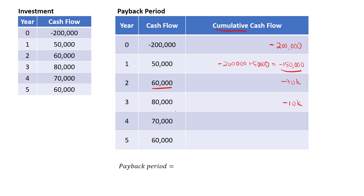By year four, there is a cash inflow of $70,000. So negative $10,000 plus $70,000 gives positive $60,000. And adding $60,000 in year five, that will be positive $120,000.